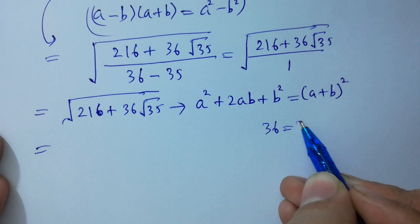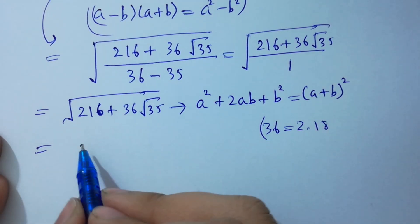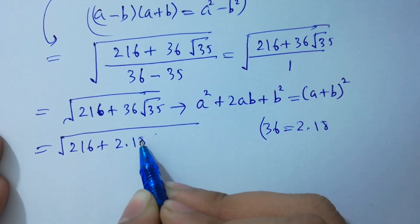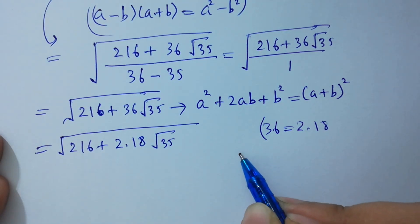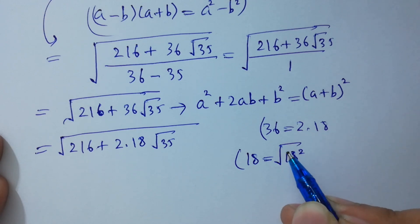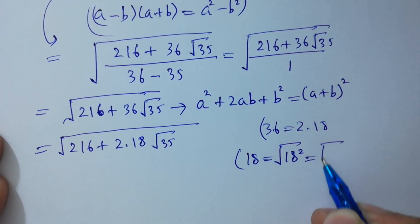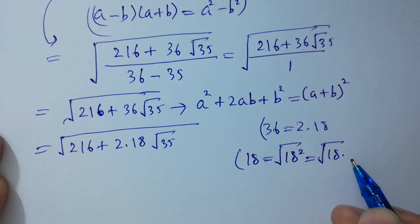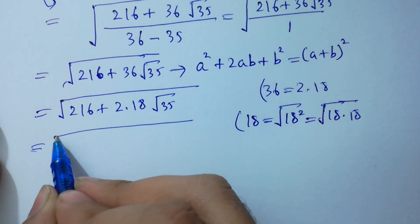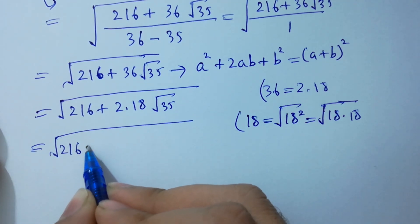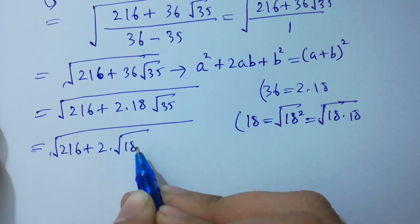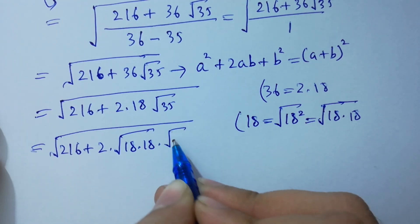Since 36 equals 2 times 18, it will be 216 plus 2 times 18 times square root of 35. And since 18 equals the square root of 18 squared — the square and square root cancel — 18 equals square root of 18 times 18, which equals 216.